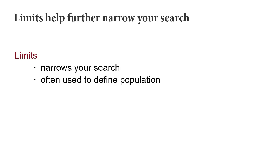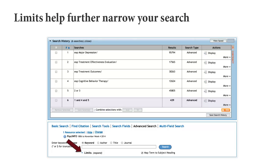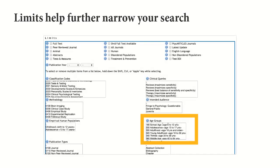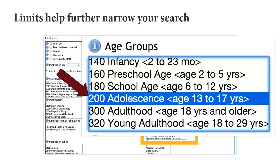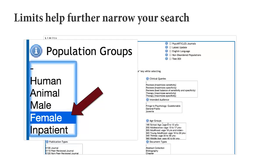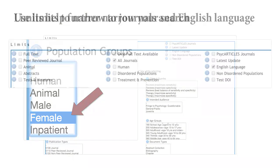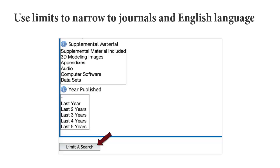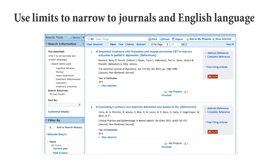In PsychInfo, we often need to use limits to define our population. We can retrieve those by selecting limits, which is below the search box. Once we have accessed the limits, we want to select additional limits. Let's choose adolescents from the age groups column and female from the population groups column. Finally, we can limit the search to all journals and to English language. Apply the limits by selecting the Limit a Search button. This takes us to a nice, manageable set of relevant articles.